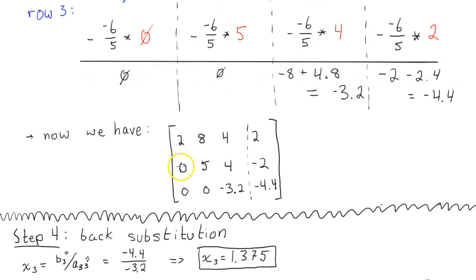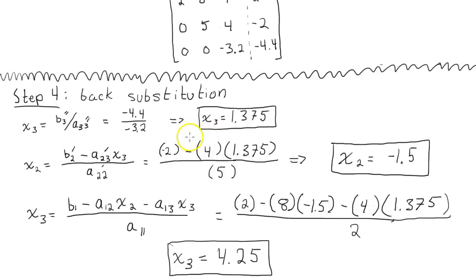Then you can go back and solve for each x. So, I mean, it's pretty clear that x3, you just move the negative 3.2 over. And that's equal to x3. And then input that in. Solve for x2. Input those two in. And solve for x3. And that's pretty much it.